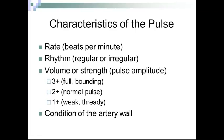Characteristics of the pulse: pulse is always recorded in beats per minute (BPM). We also record the rhythm — whether it's regular or irregular — and the volume or strength. A 3+ pulse is full and bounding. A 2+ pulse is normal. A 1+ is weak and thready — these are pulses that are a little hard to find. This is all dependent on the condition of the artery wall — is there atherosclerosis present?